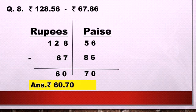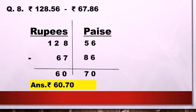This is our last example of subtraction. Here the minus sign is already given, so we can easily identify: 128 rupees 56 paise is the minuend and 67 rupees 86 paise is the subtrahend. Make two columns, place 128 under rupees and 56 under paise on top, then 67 under rupees and 86 under paise below. Subtract following the normal procedure. After subtraction, the answer is 60 rupees 70 paise. Since the question is given in symbol form, write the answer as rupees 60.70.